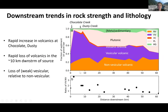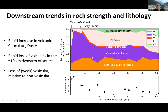Looking at the distribution of source material, it is dominantly about 80 percent vesicular grains, with a smaller proportion of non-vesicular. The vesicular clasts are lower strength, as you can imagine from those air bubbles trapped in the rock. Looking at downstream trends in sediment exposed on gravel bars, we see that above the Chocolate fan — above the main contribution of that volcanic sediment — maybe 40 percent of the bed is made up of volcanic material. Downstream, we see a rapid increase in volcanic proportion, mostly vesicular volcanics. Downstream of Dusty Creek, we see a rapid loss of volcanics, which is almost entirely a loss in the vesicular fraction, with a slight increase in the non-vesicular fraction.